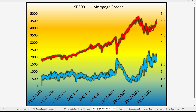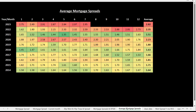Why are mortgage spreads so high if the stock market is also near highs? Historically we see the opposite. In early 2022, when the S&P 500 hit very big highs, mortgage spreads were only 1.26%. Today, with the S&P 500 knocking at the door of all-time highs, mortgage spreads are also near all-time highs — there's a clear disconnect. The data doesn't lie; it shows banks see significant risk out there.